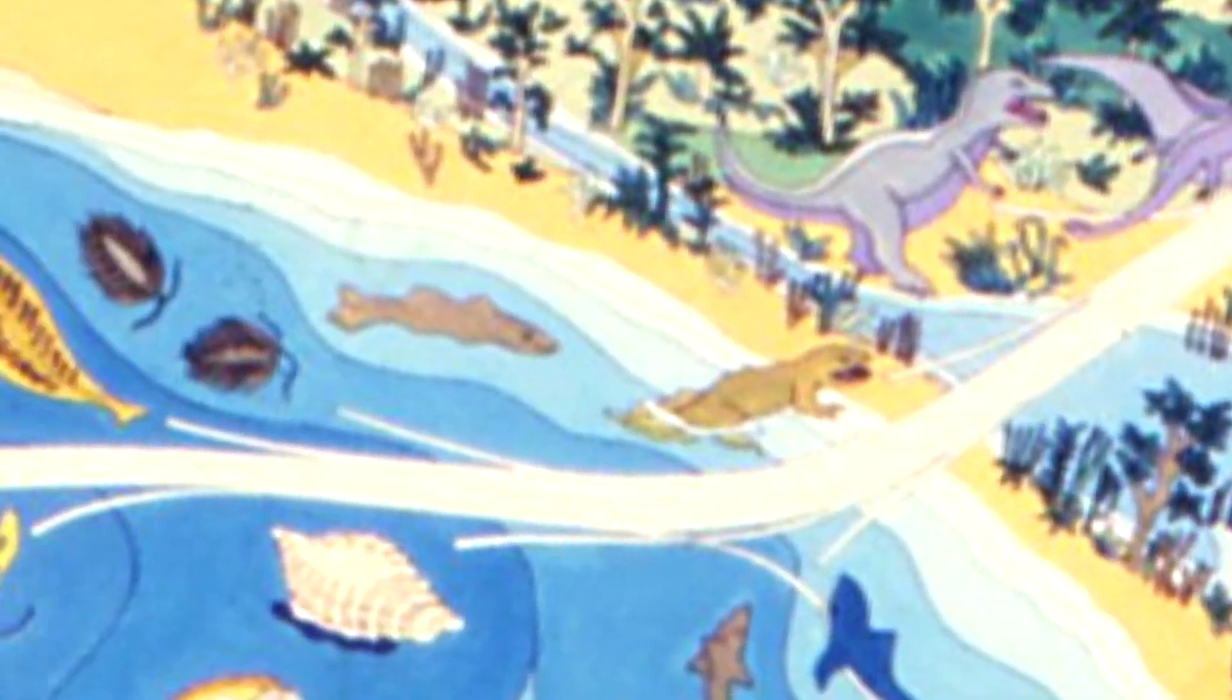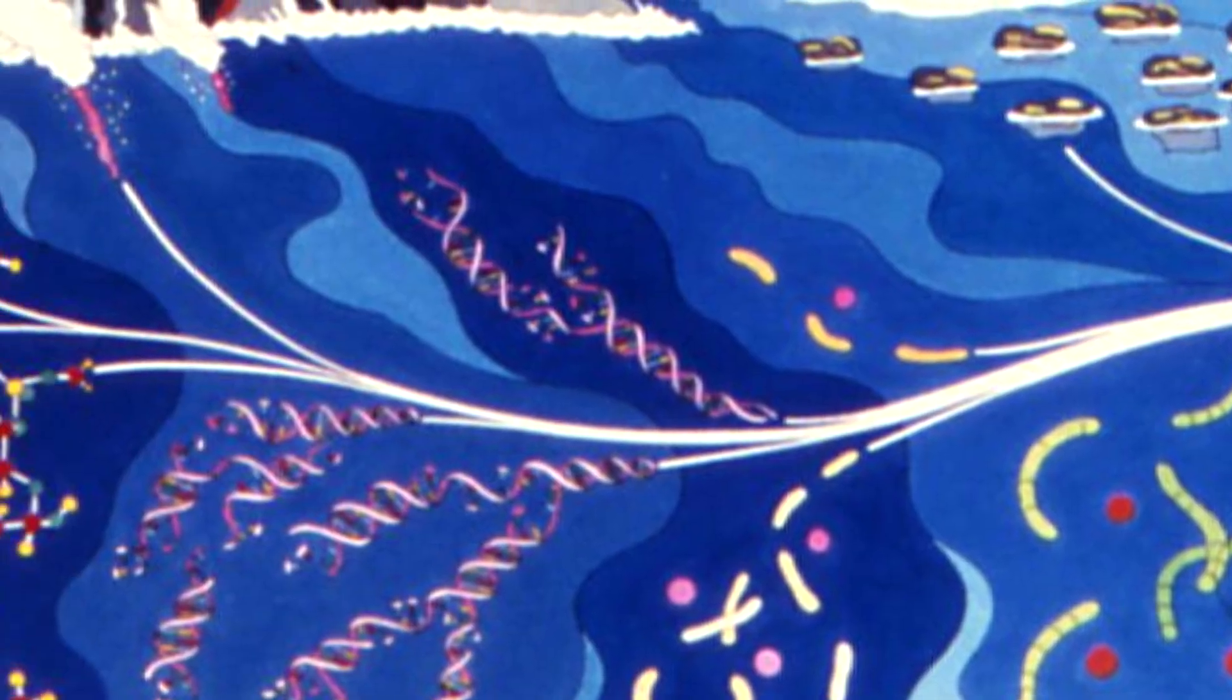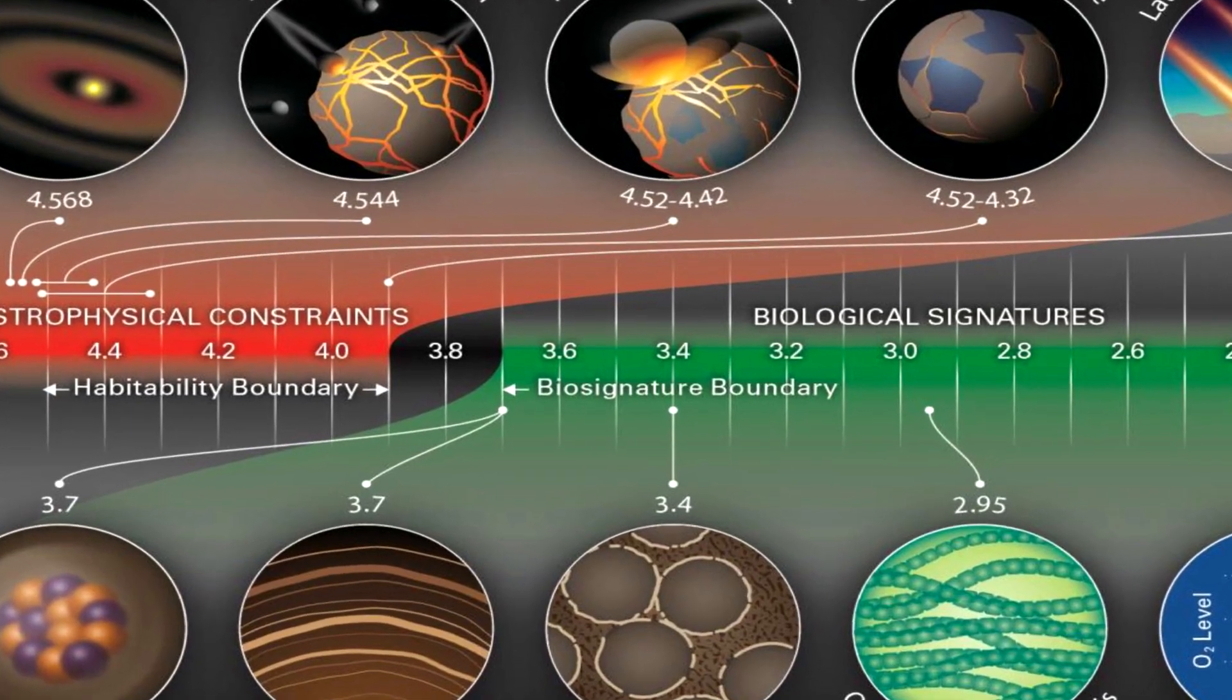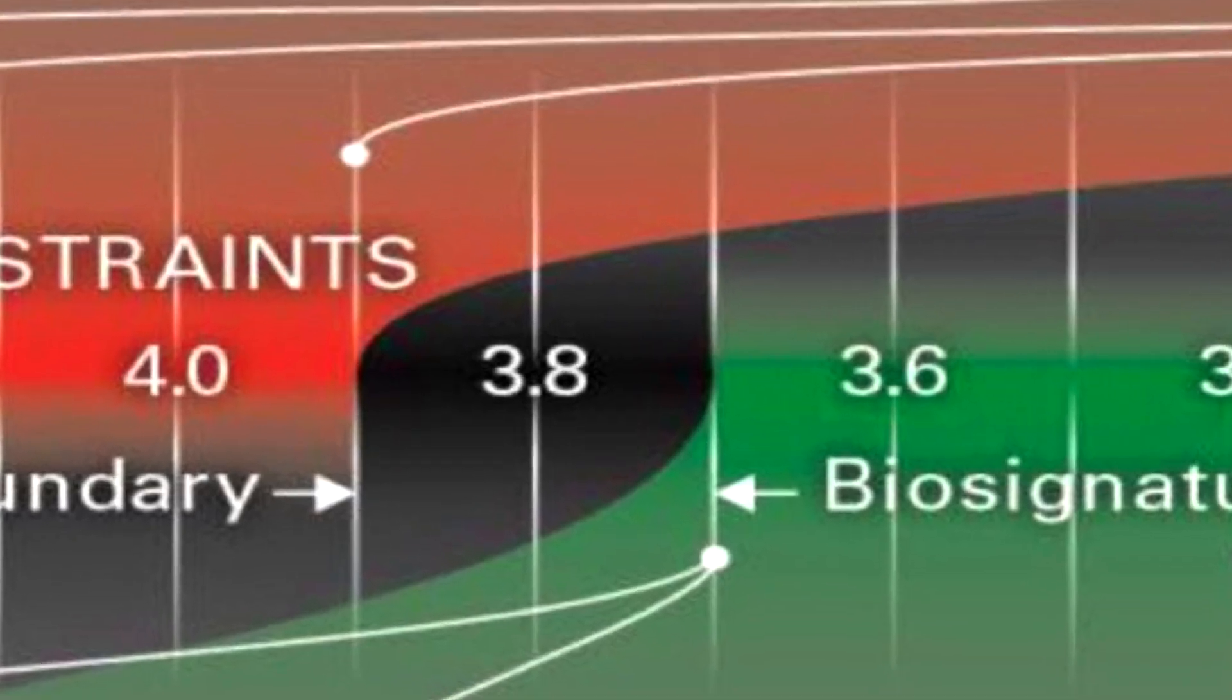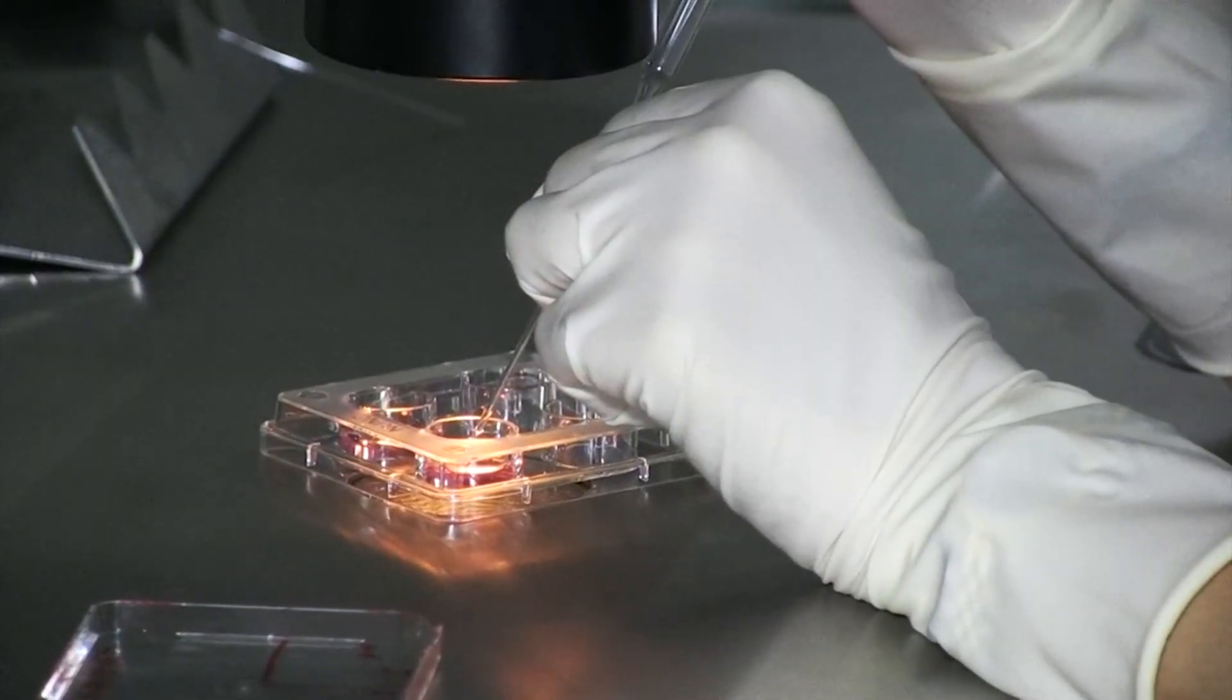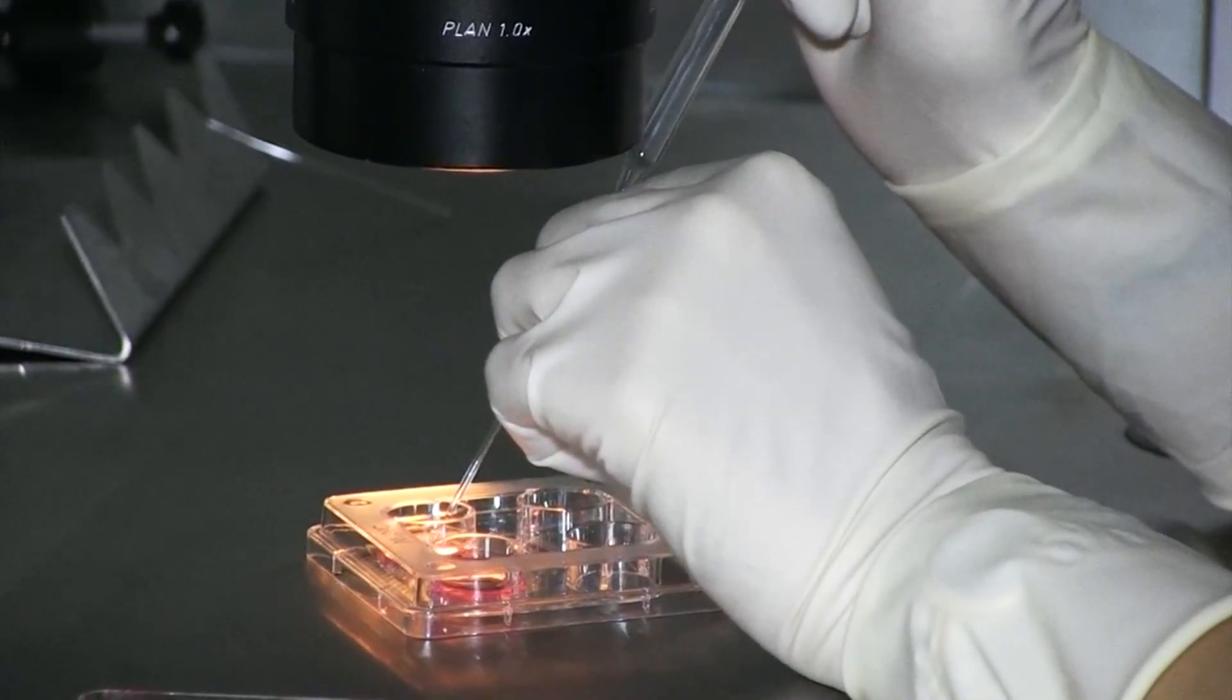From fossil evidence, we know life existed as far back as 3.7 billion years ago, which is known as the biosignature boundary. Meaning that in the 300 million year gap in between, somewhere, somehow, life found a way. Probably through a still unknown chemical process called abiogenesis, non-living material transformed to become living, self-replicating organisms.